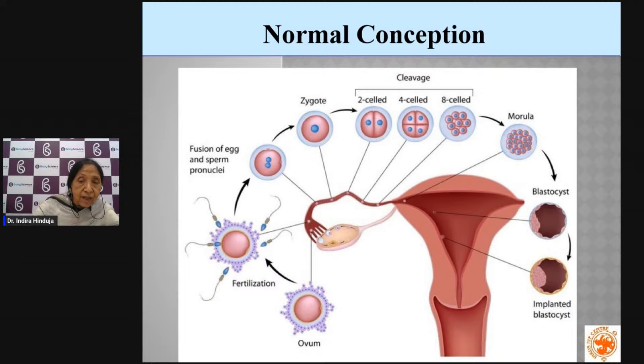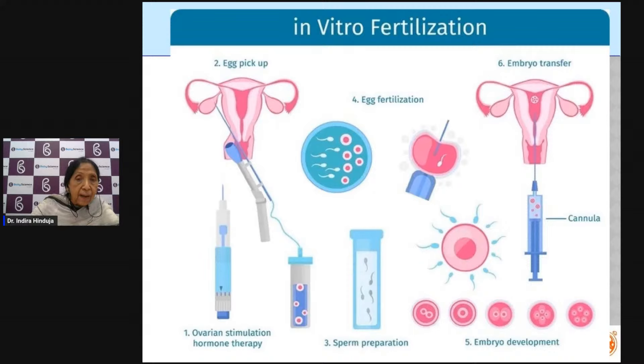The blastocyst comes into the uterus, gets implanted, and forms the baby. In IVF, we give drugs to the ovary to develop more than one egg at a time.